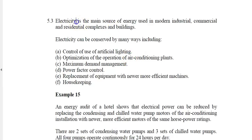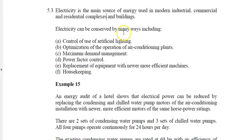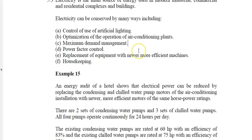In Singapore, electricity is the main source of energy. Therefore, our focus is on how to control all uses of electricity. Electricity can be conserved by many ways, including control of artificial lighting use. Where possible, we try to make use of natural lighting. We try to optimize the operation of aircon units. We try to do maximum demand management, which means if we could use more energy during off-peak hours, we may cut down on having peak loads.